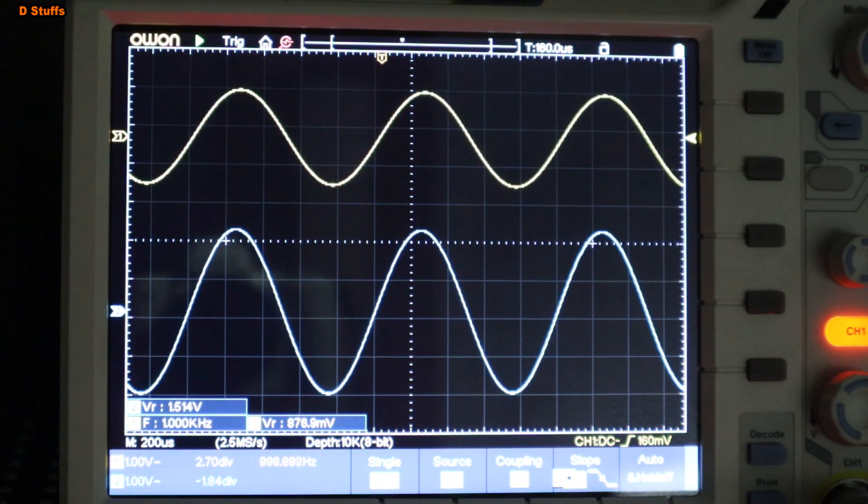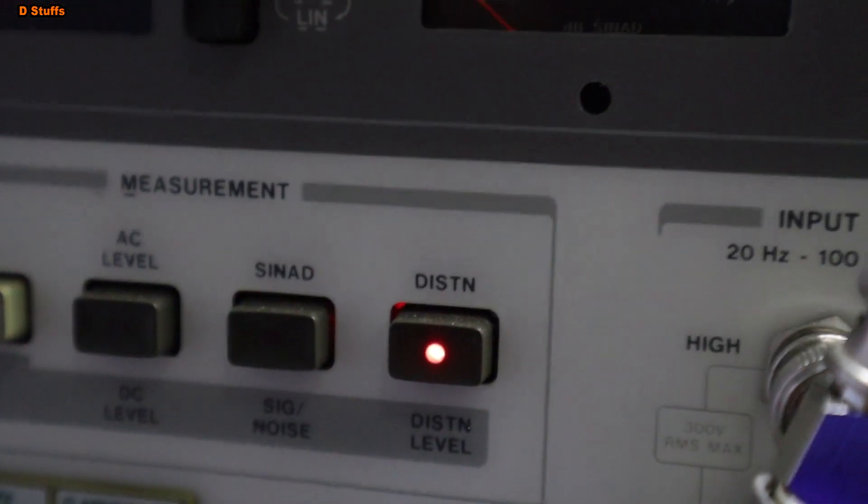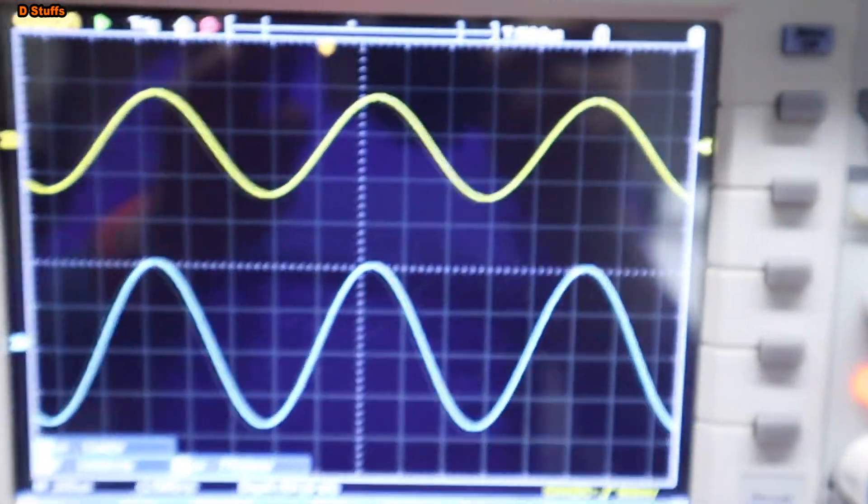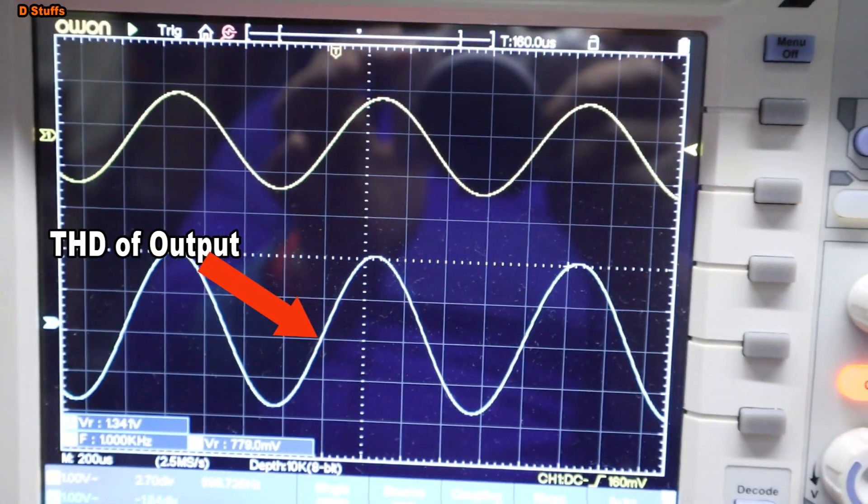That is 0 dB, no gain and no cut. The distortion at this voltage swing of the output is about 0.0724%. That is the total harmonic distortion.